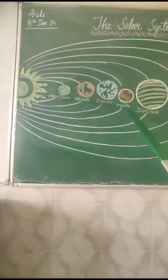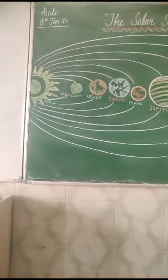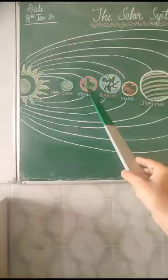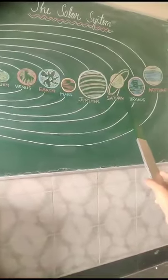Our solar system consists of the sun and everything that orbits or travels around the sun. This includes the 8 planets.